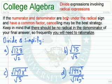Keep in mind, if the numerator and denominator are both under the radical sign and they have a common factor, canceling may be the best strategy. We do have to keep in mind, however, that there should be no radical in the denominator of your final answer. So frequently, we will need to rationalize.